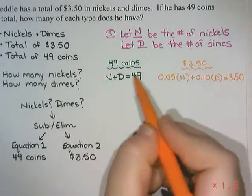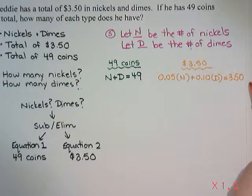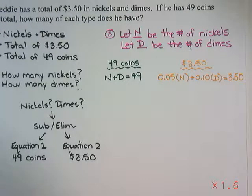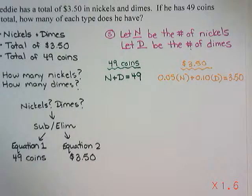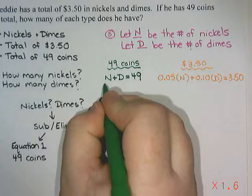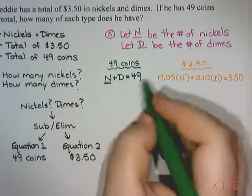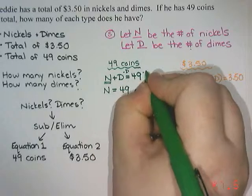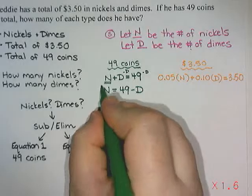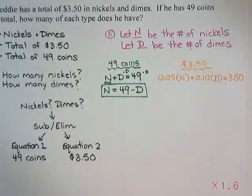I have n + d = 49 and 0.05n + 0.10d = 3.50. I could multiply by 100 to clear the decimals, but I don't mind decimals. I'll use substitution. From the first equation, rearranging for n: n = 49 − d. I'll substitute this into the second equation everywhere I see n.